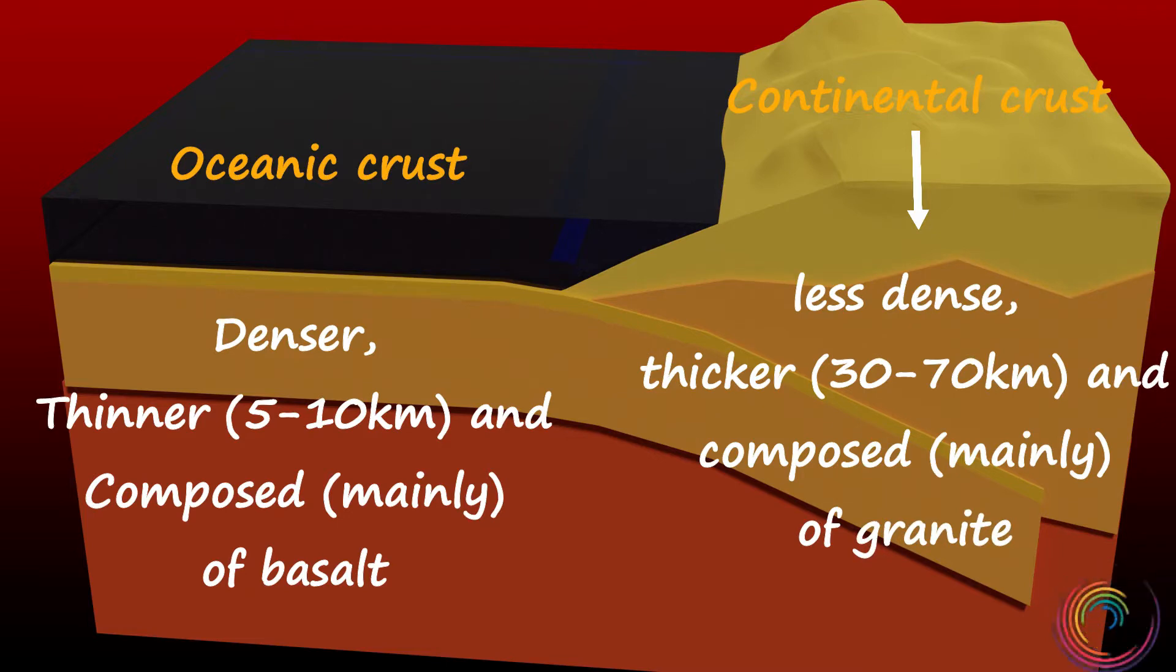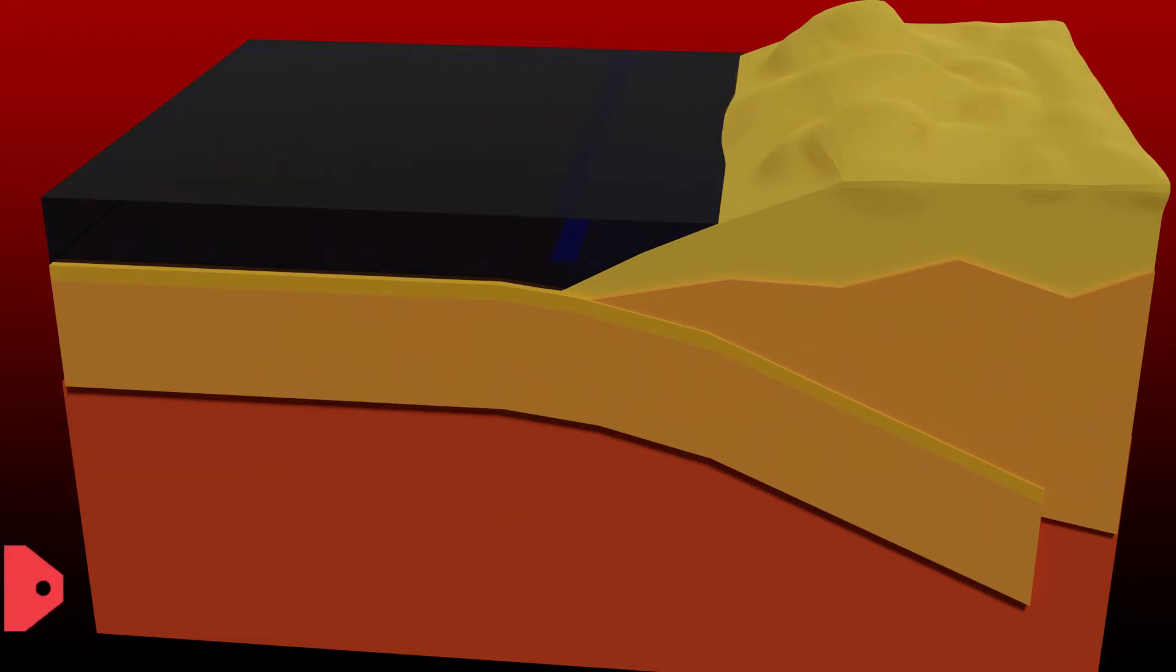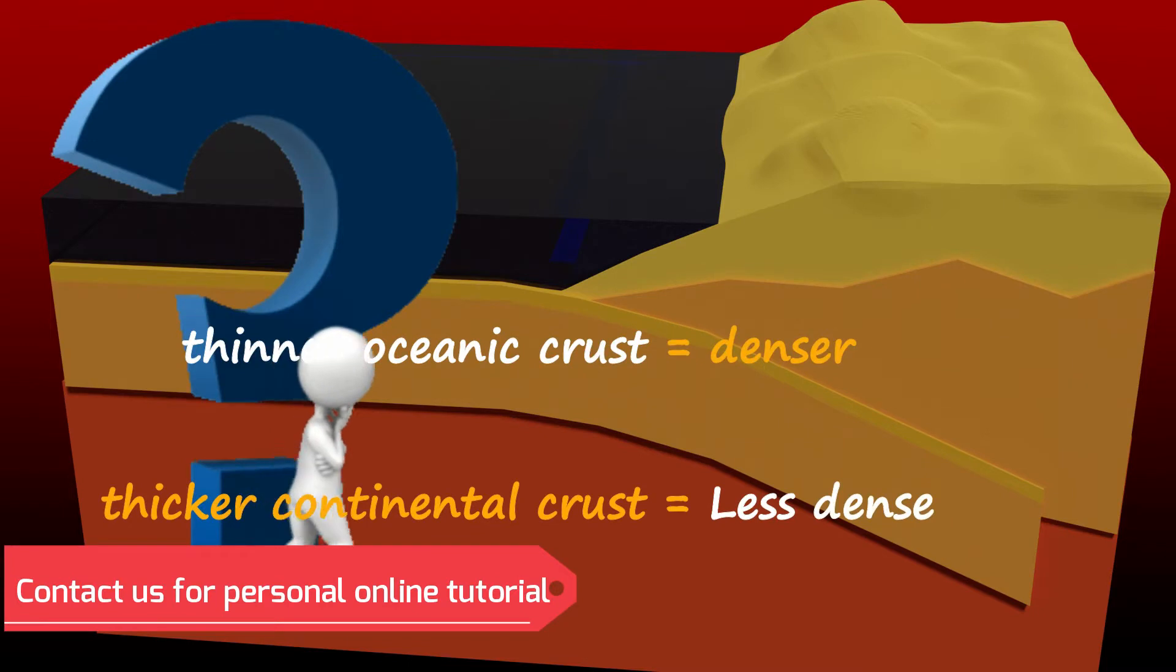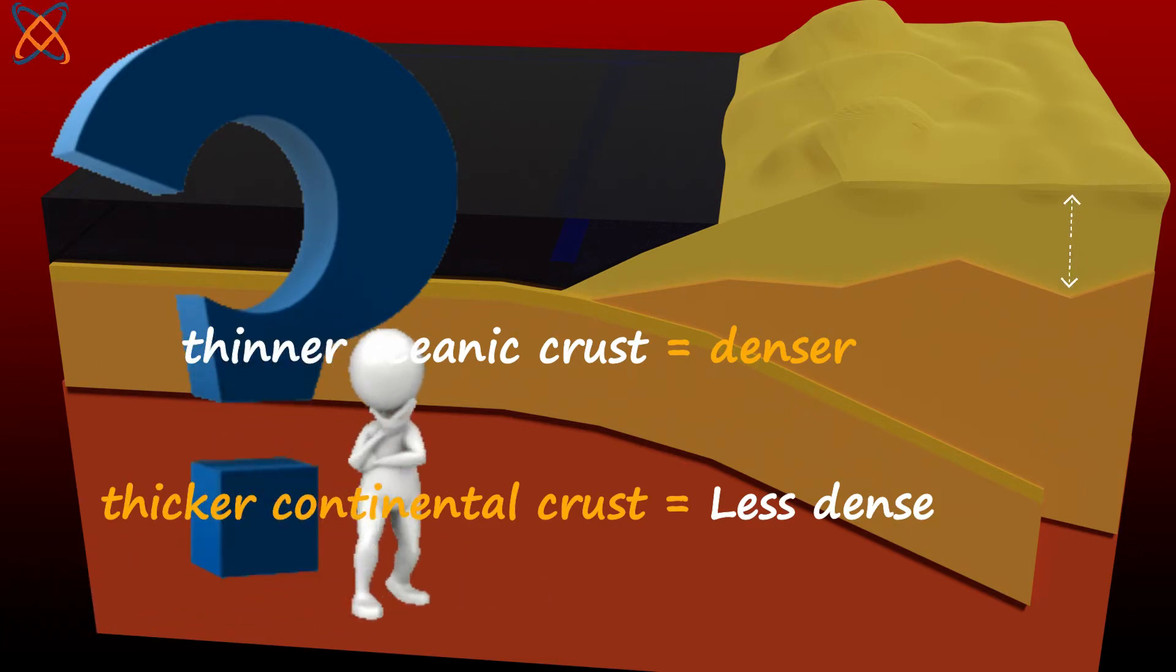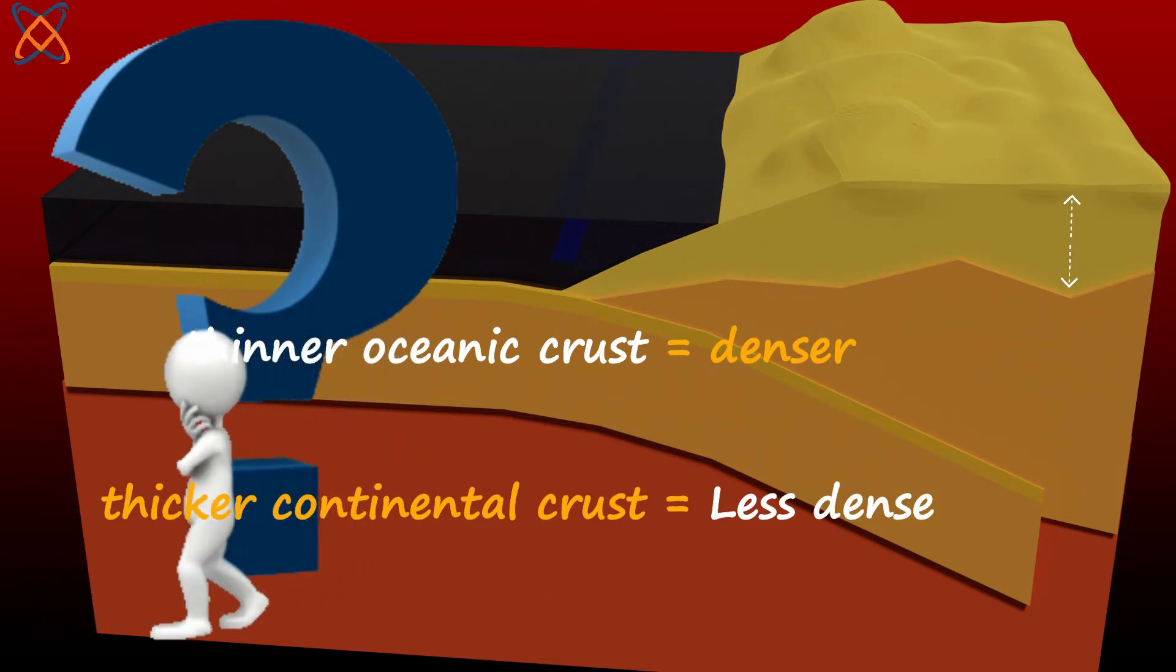Continental crust is less dense, thicker about 30 to 70 kilometers thick and mainly composed of granite. Why is it that the thinner oceanic crust is denser than the thicker continental crust? We will discuss it in the crust tutorial.